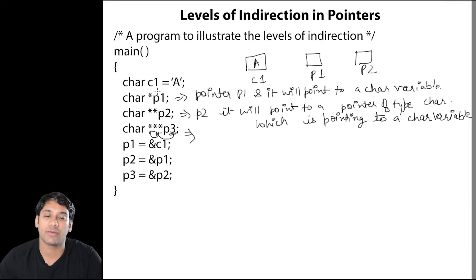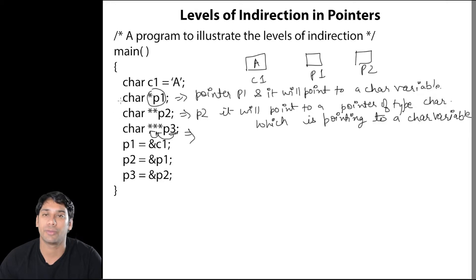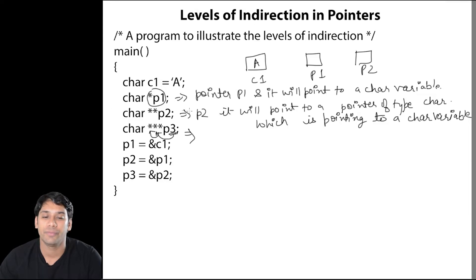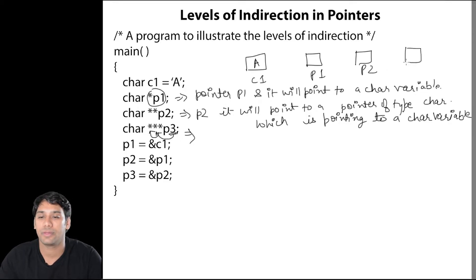So here, this is only one level — pointer P1 is pointing to C1. Here it is two levels, that means pointer P1 may point to some other pointer which is again pointing to some other variable. And here in P3, this may point to some other pointer which may point to some other pointer which is again pointing to some other character. So we are having three pointers P1, P2 and P3.